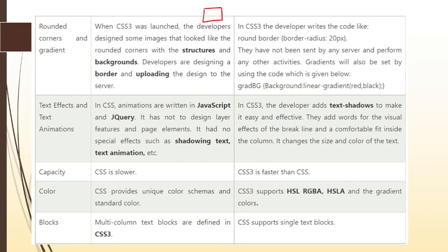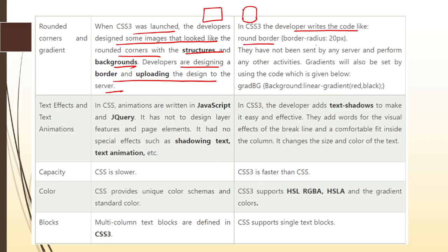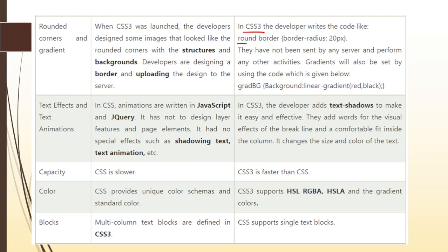The next feature is rounded corners and gradients. For example, if I have a basic table or image in HTML and I want rounded corners, in the era before CSS3, developers designed images to look like rounded corners and uploaded those designs to the server. With CSS3, the developer simply writes code like border-radius: 20px. If you want slightly rounded corners, use 5 pixels; for deeper corners, use 30 to 40 pixels. You can round the corners or add gradients to your image using the border-radius property.